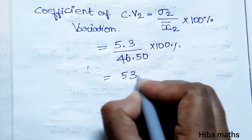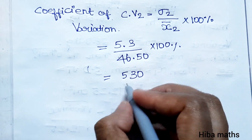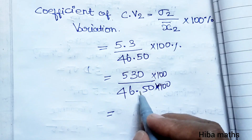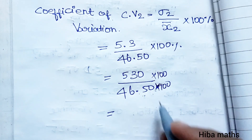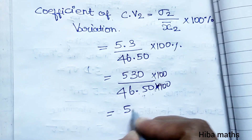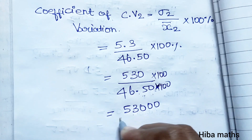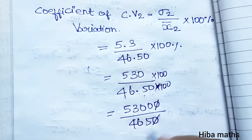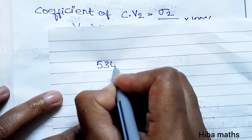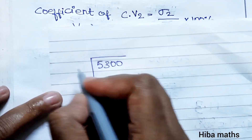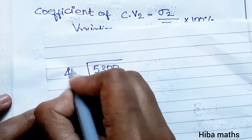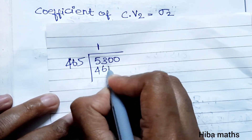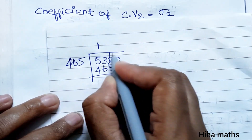Multiplying 5.3 × 100 = 530. Now dividing 530 by 46.50 — removing the decimal point gives 5300 ÷ 465. Working through the long division: 465 × 1 = 465, subtract from 530 to get balance, continuing the division.